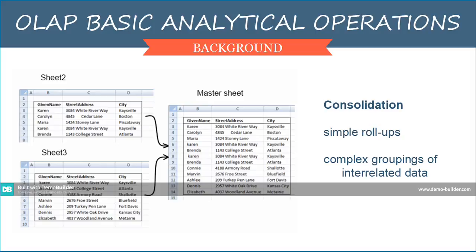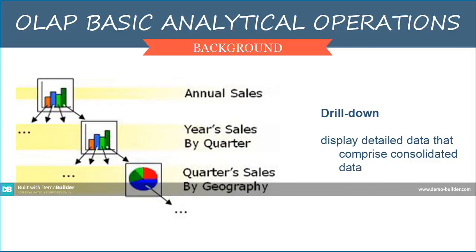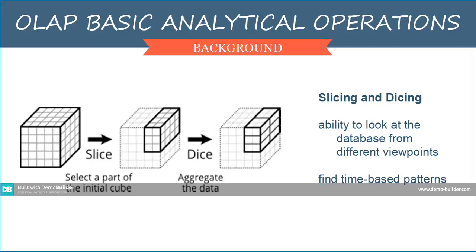Next is drill-down, which is the reverse of simple roll-ups. In drill-down, detailed data that comprise consolidated data are displayed. Another OLAP basic operation is slicing and dicing of data, which refers to the ability to look at the database from different views. One slice might show sales of a product type, while another slice might show sales channel within each product type. Often, OLAP is performed along a time axis to analyze trends and find time-based patterns in the data.